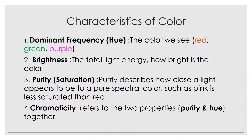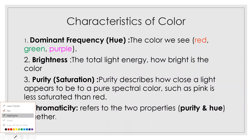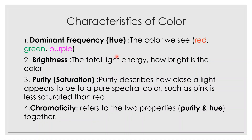Characteristics of Color. Let's go to the general characteristics of color. The first characteristic is dominant frequency, or hue. Hue is the dominant frequency — it describes what color something actually is. For example, whether a color is green or yellow determines its hue.